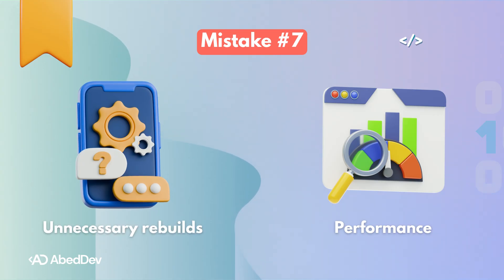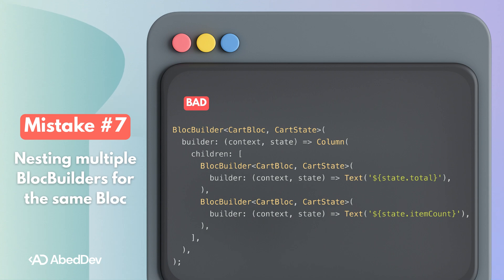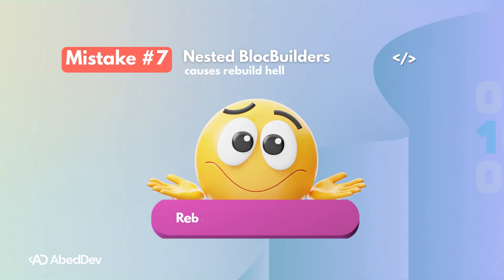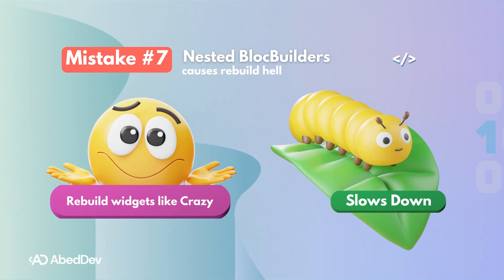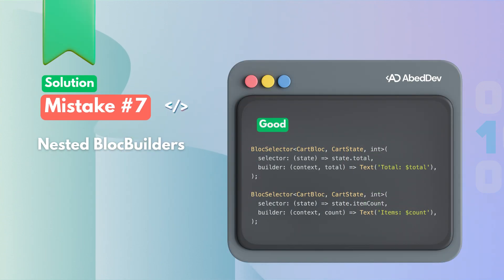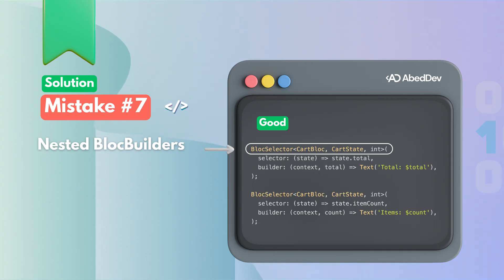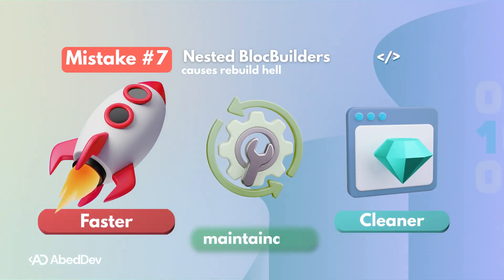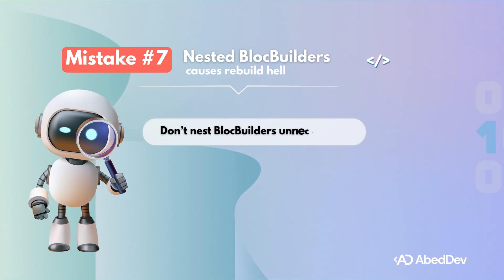Mistake number seven is about performance: nesting multiple BlocBuilders for the same bloc. Every time any field in CartState changes, all BlocBuilders rebuild — even if only total changes, the item count widget still rebuilds. You end up rebuilding widgets unnecessarily, which slows down your UI. The fix: use BlocSelector. It lets you extract only the field you care about and only rebuilds when that specific field changes — faster, cleaner, and more maintainable.